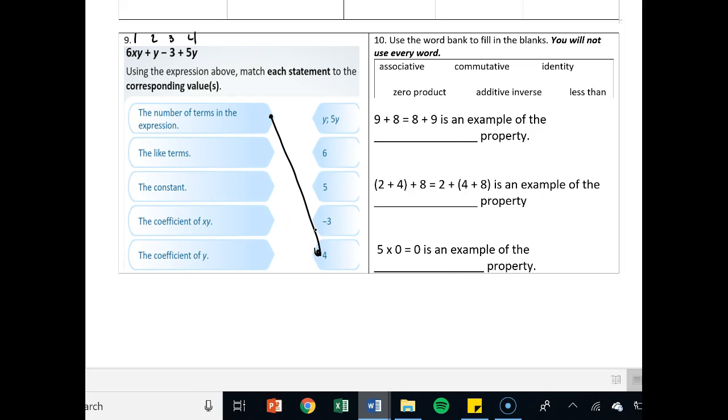It says the like terms in the expression, y and 5y. Boom, matches up right there. The constant, the number all by itself is negative 3 right there. The coefficient of xy is 6, and the coefficient of y is 5. They could have also put 1 on there, if you're going to be right.